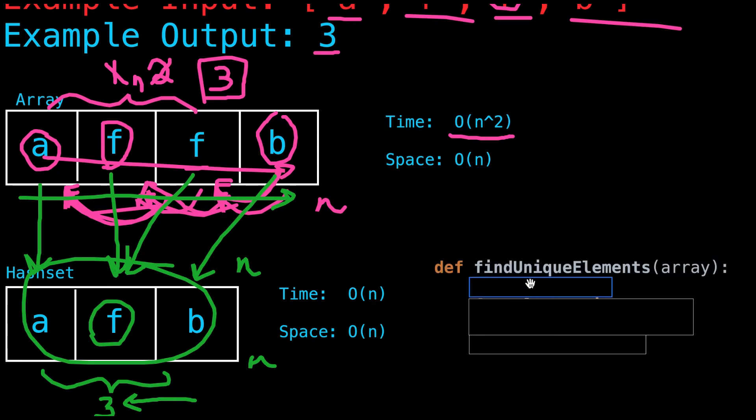I've made a function here called unique elements, and in that, we pass in the array. After that, the first thing we want to do is make our set. In Python, making a set is pretty straightforward. You just declare it and create a set.